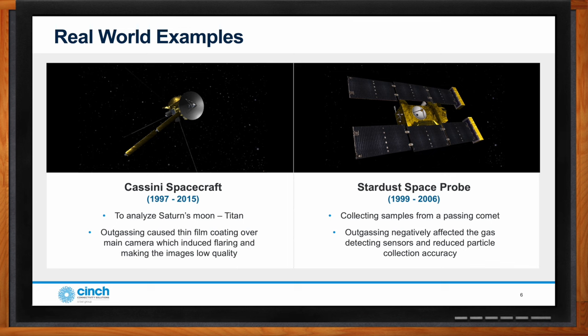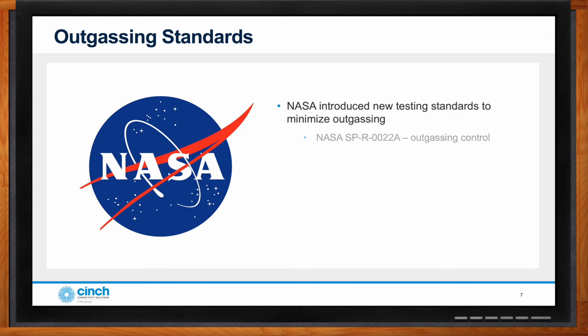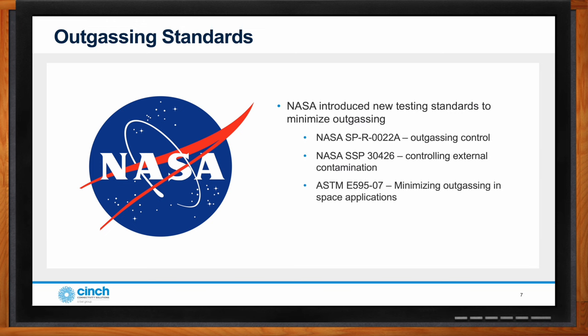NASA has standards specifically for outgassing. There are all sorts of different organic materials used in manufacturing spacecraft, probes, satellites, vehicles, the International Space Station, and interconnects. Over the years, NASA has developed various techniques, procedures, and policies that you must follow to remove or de-risk outgassing from all systems going up into space.